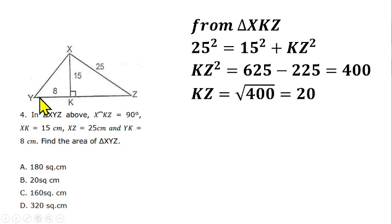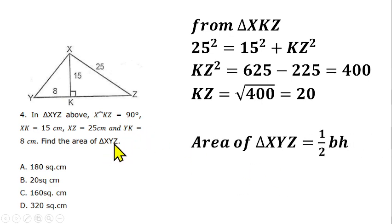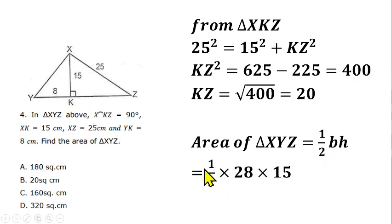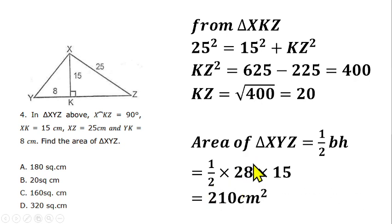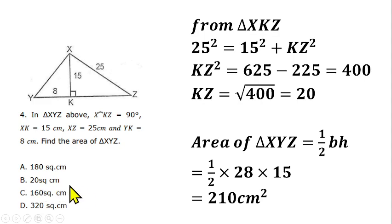The area of triangle XYZ = half × base × height = (1/2) × 28 × 15 = 14 × 15 = 210 cm². However, none of the options appears correct, though there may be a typographical error in option B.